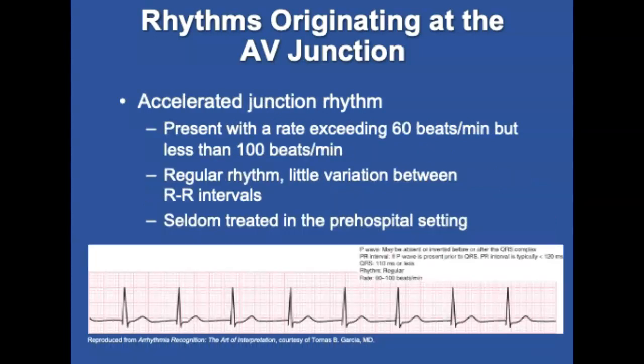Accelerated junctional rhythm occurs when the rate exceeds the normal 60 beats per minute but remains less than 100. The rhythm is regular with little variation between R-on-R intervals. The P wave, if present, is inverted before or after the QRS complex. It may be associated with digoxin toxicity, hypoxia, inferior wall MI, rheumatic fever, recent cardiac surgery, or electrolyte imbalance. The rate is fast enough to maintain reasonable cardiac output, so the patient is usually asymptomatic but should be closely monitored.